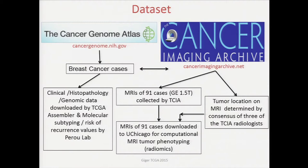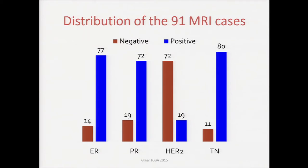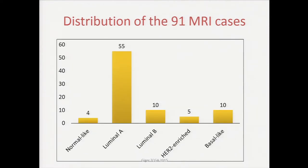This is our dataset. We work with the breast cancer cases from the TCGA, where clinical histopathology and genomic network data is downloaded using TCGA assembler, and molecular subtyping and risk recurrence values were obtained from the Peru lab at UNC. In this dataset, there were only 91 cases that had imaging data at the time; more are being collected. The distribution shows many are ER-positive, PR-positive, HER2-negative, and most are not triple-negative. Most of them are luminal A in cancer molecular subtype.